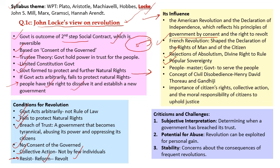The concept of civil disobedience — given by Henry David Thoreau about 150 years later — also derives from this: that we can peacefully withdraw our consent. Gandhi used this concept in the Non-Cooperation Movement and Civil Disobedience Movement, drawing on Thoreau. The importance of citizen rights, collective action, and the moral responsibility of citizens to uphold justice — Gandhi said a nation is alive only as long as it comes out on the streets to oppose arbitrary government action. Criticism: the interpretation is very subjective — who determines whether the government has breached trust? There is potential for abuse — any group could use this to agitate, making governance very difficult and causing political instability.